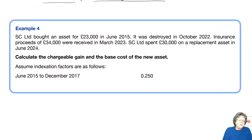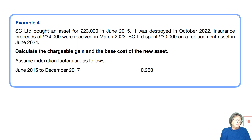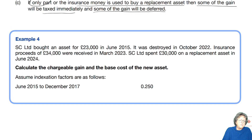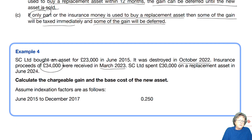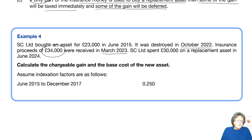Example number four: SC Limited bought an asset for £23,000 in June 2015. It was destroyed in October 2022. Proceeds of £34,000 were received in March 2023 — that is the date of disposal, when the insurance was received. They spent £30,000 of that money replacing the asset in June 2024. We need to calculate the gain and the base cost of the new asset.